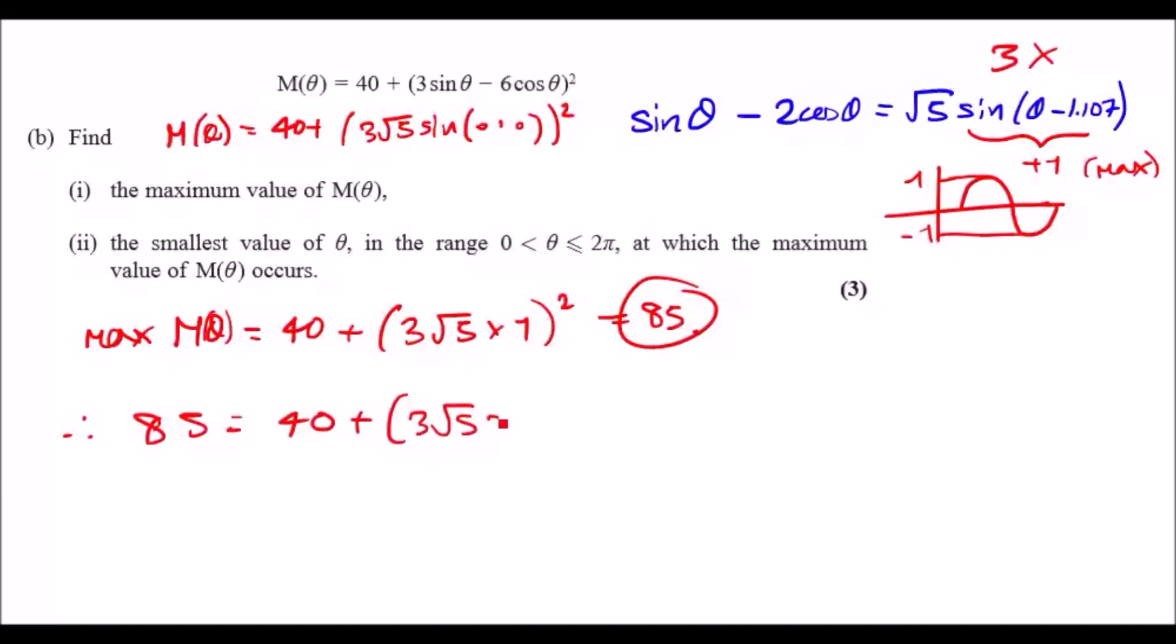And just solving to make sine the subject. Subtracting 40 you get 45, square root you get plus minus √45 equals... and divide 3√5 equals sine blah blah blah.